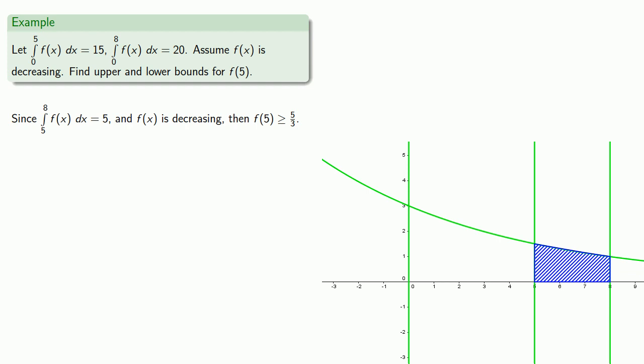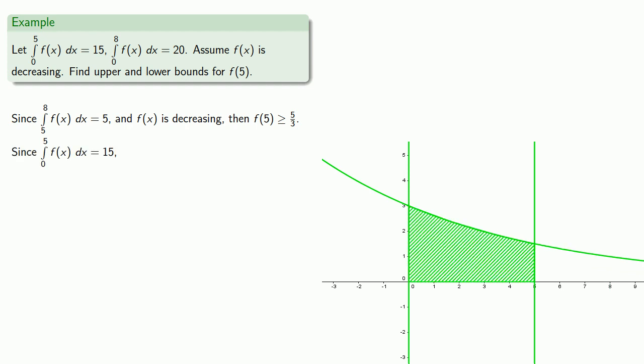That works so well let's see what else we can do. We know that the definite integral from 0 to 5 has value 15 and so that tells us the area from x equals 0 to x equals 5 has area 15.